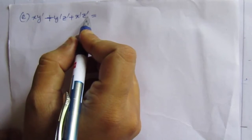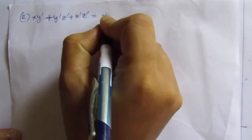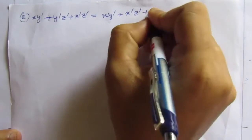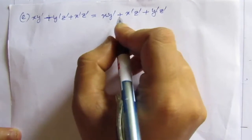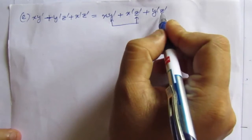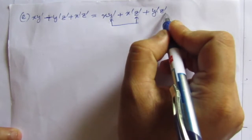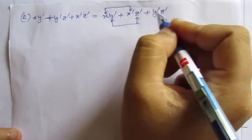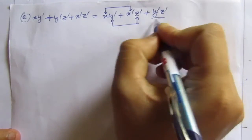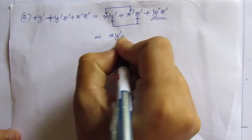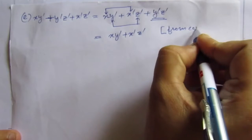Now let us solve the fifth part: xȳ + ȳz̄ + x̄z̄. Let us rewrite this, bringing the x̄z̄ term to the second position: xȳ + x̄z̄ + ȳz̄. You can see that the first term contains x and the second contains x̄. The factors ȳ and z̄ from the third term are already present in the first two terms. By the consensus theorem, we can omit the third term, giving us xȳ + x̄z̄.